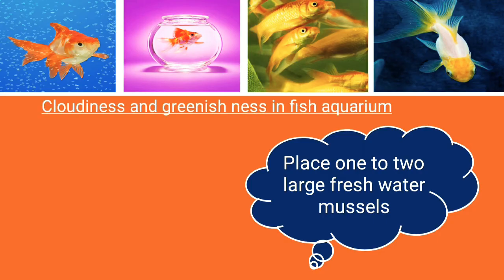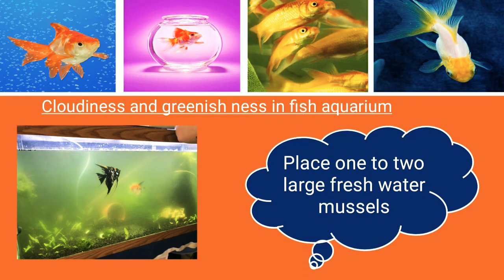Regarding cloudiness and greenness in a fish aquarium: if you don't have an aerator or filter, you need to change the water every 15 to 30 days; with a filter, every 2 to 3 months. If there is greenness in the aquarium, you can place one or two large freshwater mussels, which are filter feeders. They will consume the green substances and bacteria, restoring the water quality.